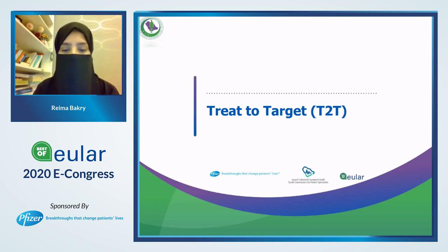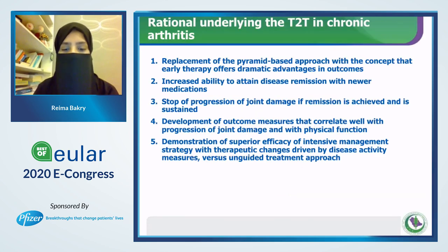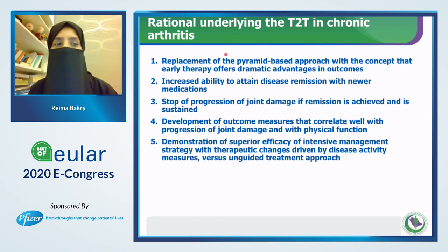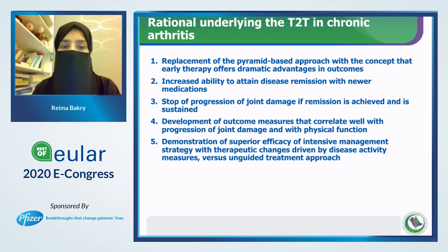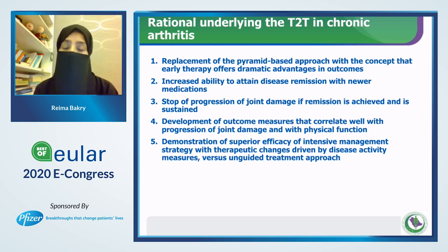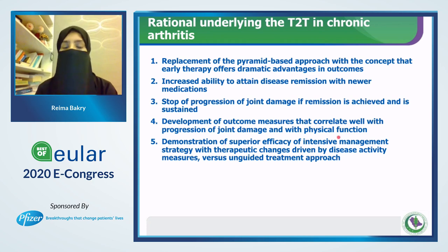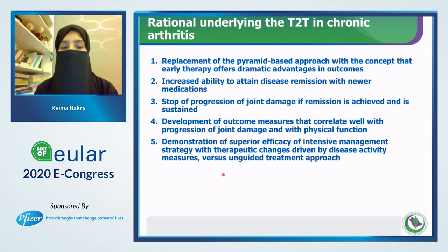Now moving to the second part of today's presentation: treat-to-target. The rationale underlying treat-to-target in chronic arthritis is the replacement of the pyramid-based approach with the concept that early therapy offers dramatic advantages in outcome. With the era of new medications and biologics, we can increase the ability to attain disease remission. If remission is achieved and sustained, we can stop the progression of joint damage, using outcome measures that correlate well with joint damage progression and physical function.